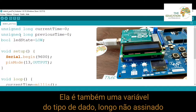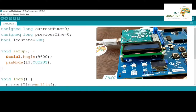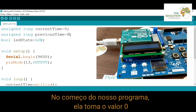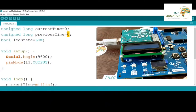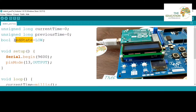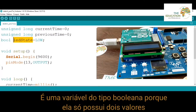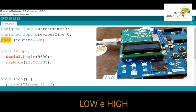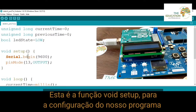The 'previousTime' variable gets the value zero at the beginning of our program. We also have the 'ledState' variable — it's a bool variable because it only gets two values: LOW and HIGH.